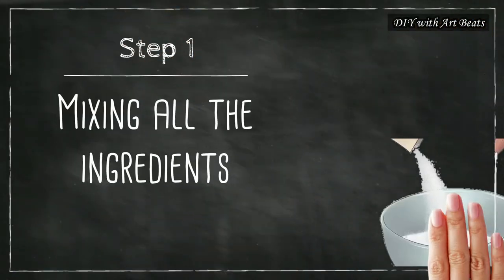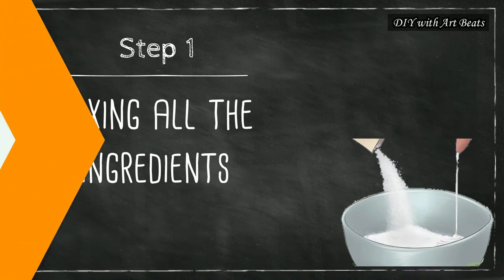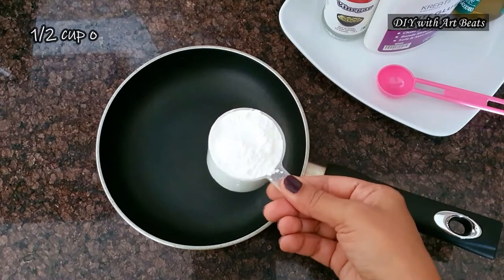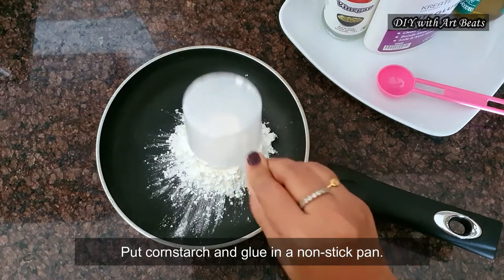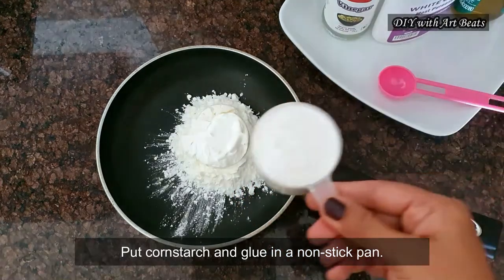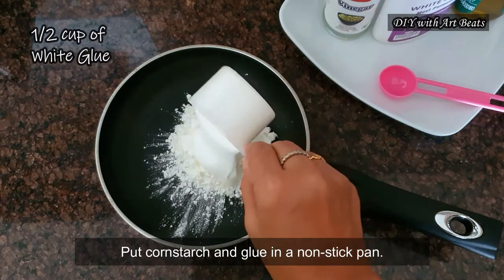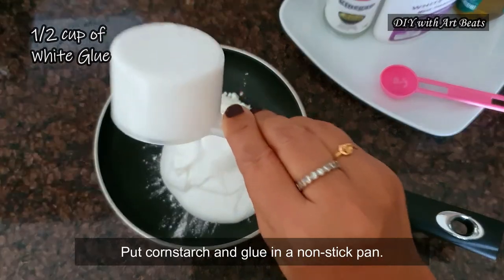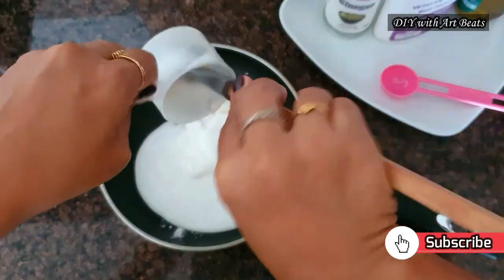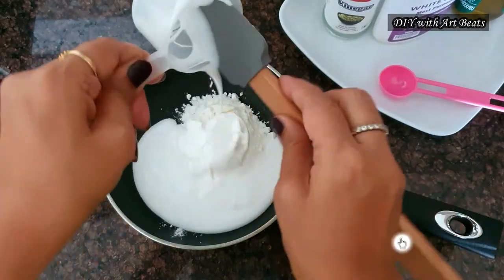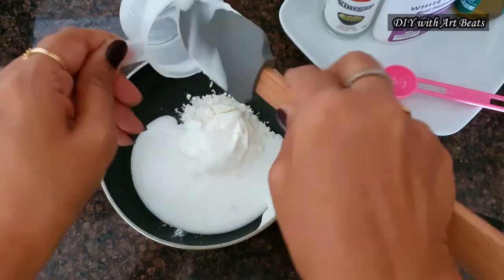Now our first step is mixing all the ingredients. In a non-stick pan, I am taking corn starch and white glue in equal ratio. I have reduced the quantity in half as I wanted to make it for a small project only. If you want to make the clay for bigger projects, then you can increase the measurements in the same ratio.